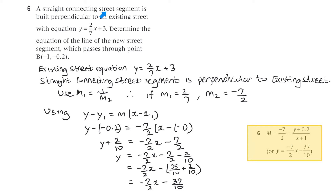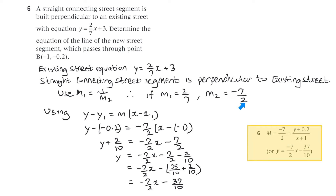Question 6: a straight connecting street segment is built perpendicular to an existing street with equation y equals 2 on 7x plus 3. Determine the equation of the new street segment passing through a given point. Since it's perpendicular, we use m1 equals minus 1 on m2. The existing street's gradient is 2 on 7, so the new segment's gradient m2 is minus 7 on 2.